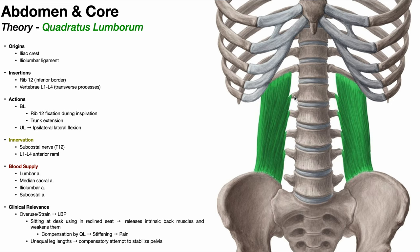The actions of the quadratus lumborum depend on whether we're talking about bilateral or unilateral contraction. For bilateral contraction, it involves fixation of rib 12 during inspiration and also weakly aids in trunk extension. The major trunk extensor is the erector spinae, but the quadratus lumborum can assist with that — there's some clinical relevance to that, so keep that in mind. When the quadratus lumborum contracts unilaterally — only right or only left — you get ipsilateral lateral flexion or side bending. So if we only contracted the right quadratus lumborum, we get right lateral flexion. Many other muscles also facilitate that, like the oblique muscles and the erector spinae, but the QL does participate.